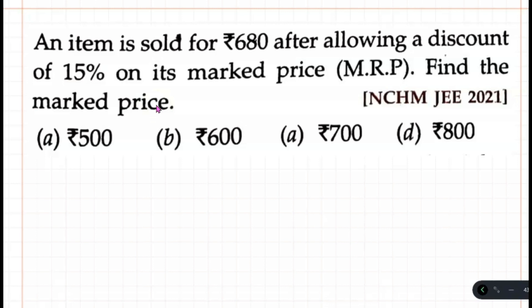So we have to find the initial price here. From the first sentence, an item is sold for Rs 680 after allowing a discount of 15%. Marked price is X. Then that's the 15% discount on it, so which is 100 minus 15, which equals 85.